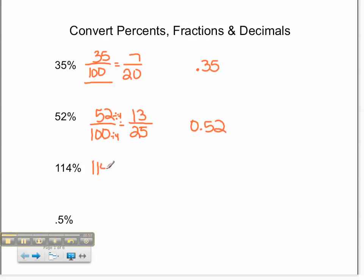114%. We are still comparing 114 to 100. We can make this a mixed number by saying 1 and 14 hundredths, which reduces to 1 and 7 fiftieths.